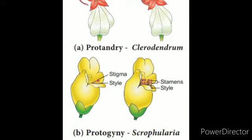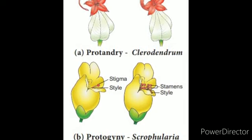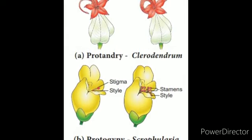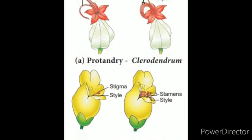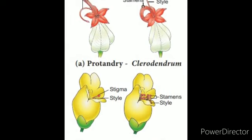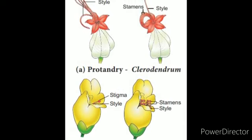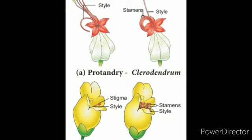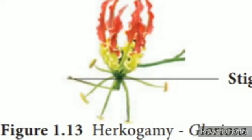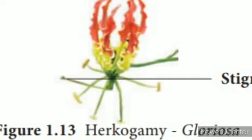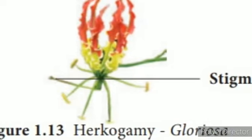The next strategy is heterostyly, in which the styles of flowers of the same species are at different heights. Example is salvia. The next strategy is self-sterility, also called self-incompatibility, in which the stigma prevents the germination of self pollen. Example is abutilon.